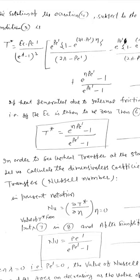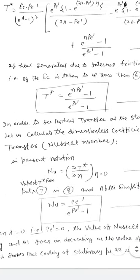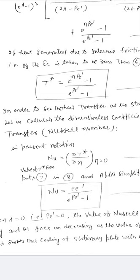To study heat transfer at the stationary plate, we calculate the dimensionless coefficient of heat transfer, known as the Nusselt number. In the present notation, Nusselt number Nu = (dT*/dn) at n = 0. This is equation number 8. Substituting T* from equation 7 into equation 8 and simplifying, we get: Nu = Pe'/(e^(Pe') − 1). This is equation number 9.